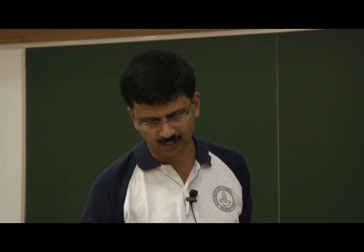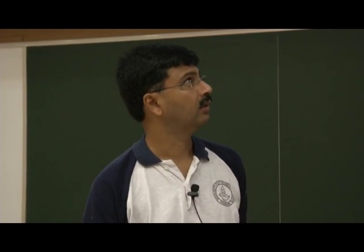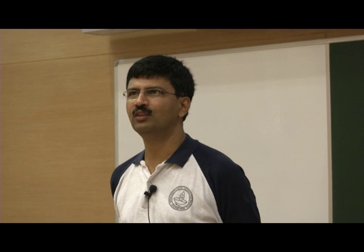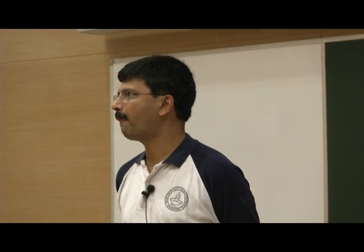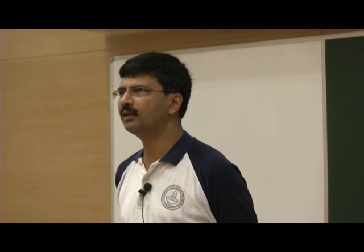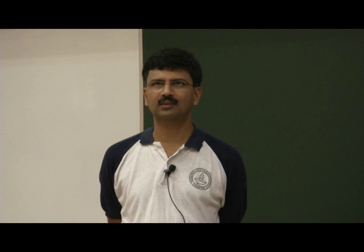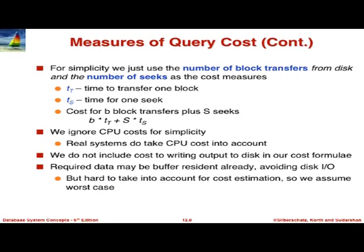The cost depends on two parts: the number of blocks transferred and the number of seeks. Today, disks are very fast at transferring data — they have become a factor of 20 faster in transferring data than disks 10-15 years ago; you can get disk transfers of 200 megabytes per second. Whereas a while ago, 10 megabytes per second was very high. But the seek time for hard disks has not changed much at all in the last 30 years — it's improved by a factor of 2 maybe.